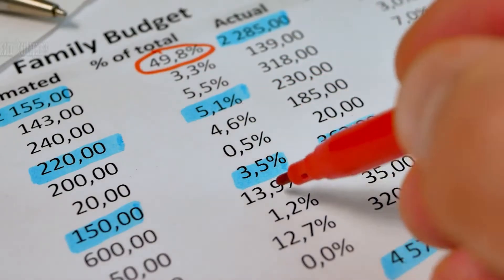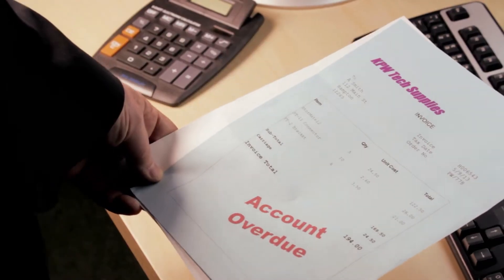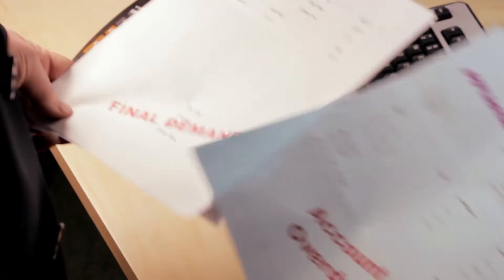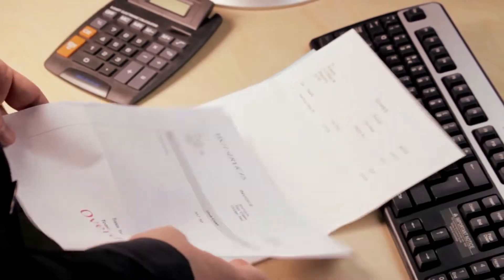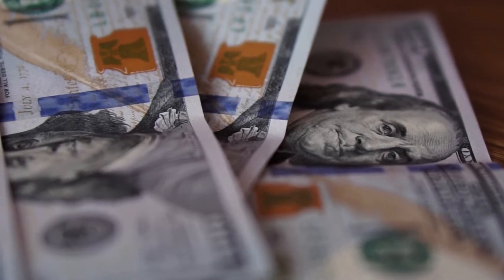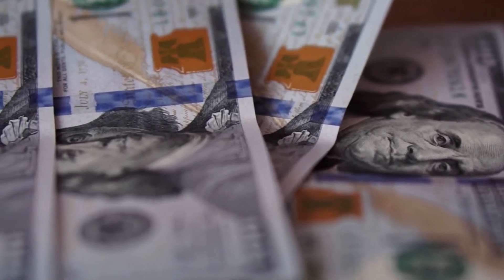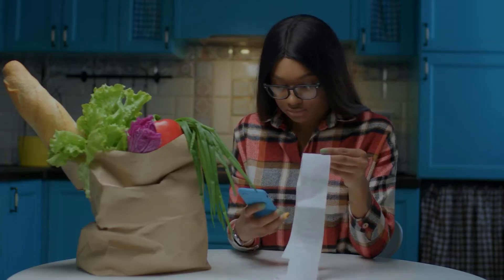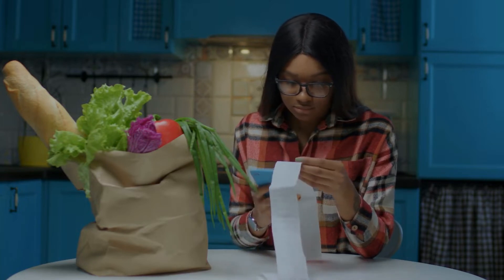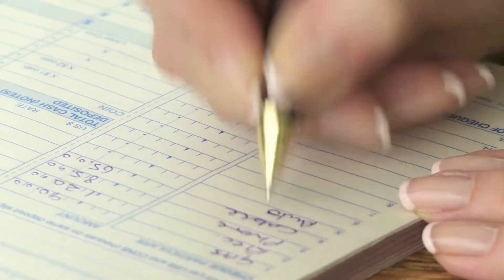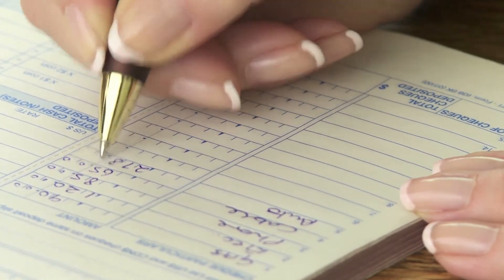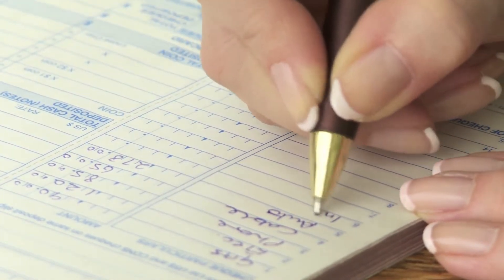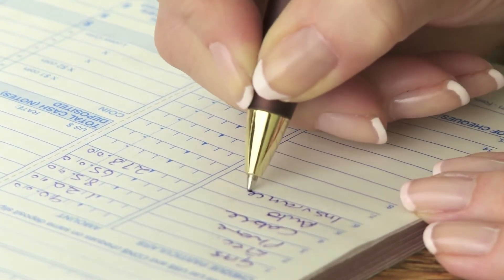Mistake number one: not tracking your expenses. Tracking your expenses is one of the critical factors to success in your debt-free journey on a low income. You have to know where your money is going to make informed decisions about your spending. Unfortunately, many people make the mistake of not tracking their expenses, which can lead to problems. Without knowing where your money is going, it's easy to overspend and end up in debt. Additionally, not tracking your expenses can make it challenging to stick to a budget. If you're unsure where your money is going, you will likely spend more than you can afford.